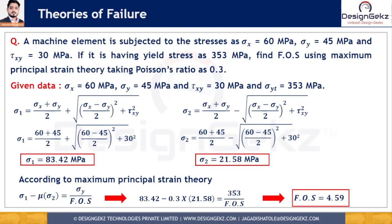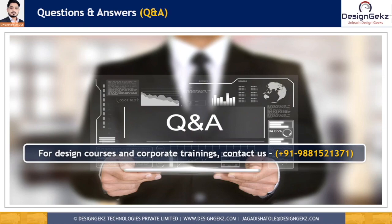Although the maximum principal strain theory is appropriate for ductile materials, brittle materials, and materials under hydrostatic pressure, it is not commonly used for design of ductile materials because it overestimates or overpredicts the elastic strength of ductile materials. That is why it is not a very popular failure theory. This is all about the maximum principal strain theory, or Saint Venant's theory. Stay tuned with Design Geek for more learning videos. Thank you.